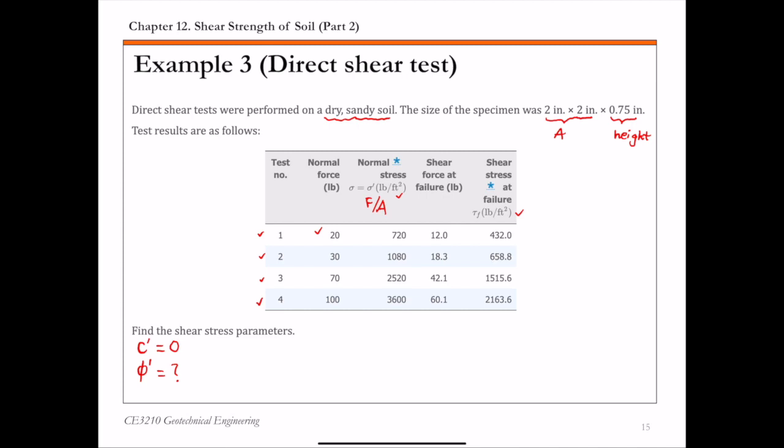And the way to get this phi prime is we're going to use this direct shear test results plotted on this sigma versus tau plot. For each test, we have a pair of stress values. We have the sigma, the normal stress, and we have the shear stress at failure tau F. So for each test, we can plot this pair of data on this sigma versus tau plot.